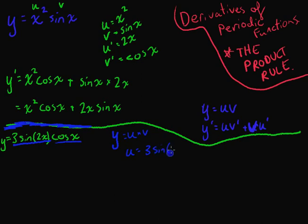So u is our first one, 3 sine 2x. v is our second one, cos x. u dash, v dash. Okay, so u dash is the derivative of 3 sine 2x. That's going to be 3 cos 2x. And we need to put that 2 out the front as well. So it's actually going to be 6 cos 2x.